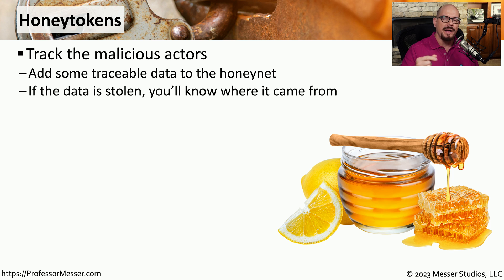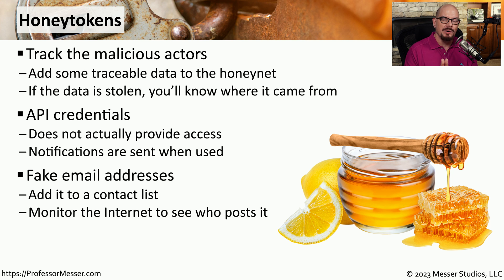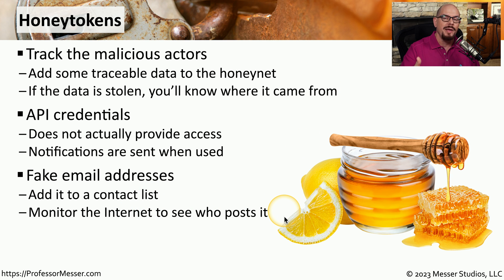Another type of data that might help you identify issues with data being released into the public would be a honey token. Honey tokens are a bit of traceable data that you would add to your honeynet. So if that information is copied and distributed, you know exactly where it came from. For example, you might put API credentials out on a public cloud share to see who may come by and grab those credentials — these are not actual usable API credentials. Or you might have a file that contains fake email addresses. Because these email addresses are not used by anyone, you can monitor for those addresses to appear somewhere else on the internet, and if they do, you can see exactly who posted it, which might give you information about who may be attacking your network.